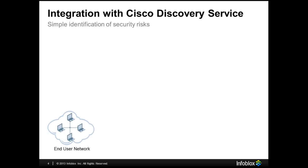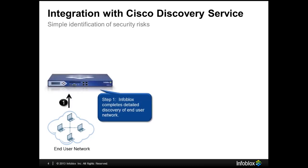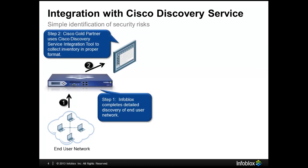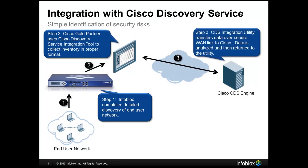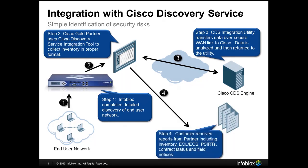The best way to highlight this is a simple workflow. First, the Infoblox network automation platform completes the detailed discovery of the network. Then a Cisco Gold partner uses the integration tool to collect the inventory into the proper format. Then the utility transfers the data over a secure WAN link to the Cisco database. The information is analyzed and returned to the utility, and the final step is the customer receiving the reports from the partner.